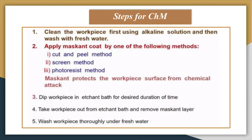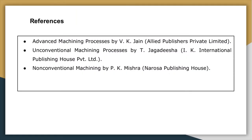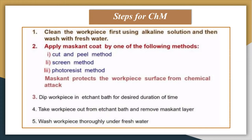Now let us discuss the steps for chemical machining. The first step is to clean the work piece using an alkaline solution and then wash it with fresh water, so that any dust or other contaminants on the work piece are removed and the etchant can directly react with the work piece material.